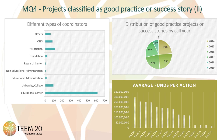There are three more factors analyzed. One has to do with different types of coordinators — as can be seen on the graphic, educational centers are the most relevant. Another is associated with the distribution of good practice or success story projects by call year, and the last one is related to the average funds per action.